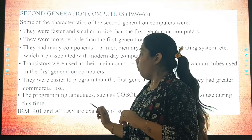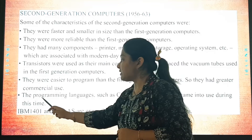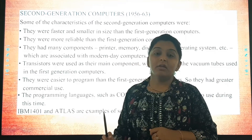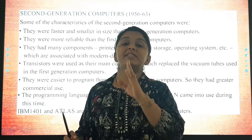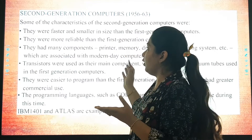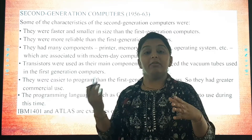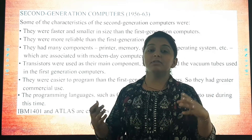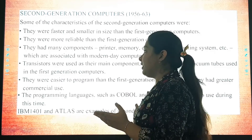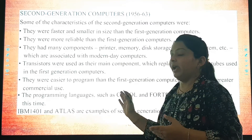The examples of second generation computers that you need to remember are IBM 1401 and ATLAS. To recap: second generation computers were faster and smaller in size, easier to use, with transistors as the main component, and the two examples are IBM 1401 and ATLAS.